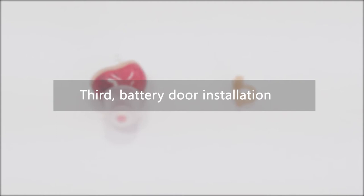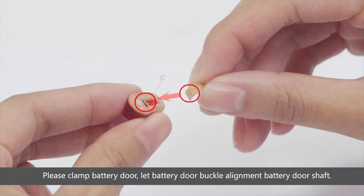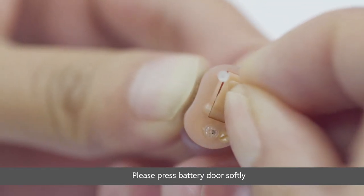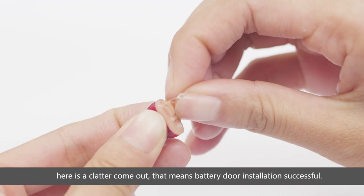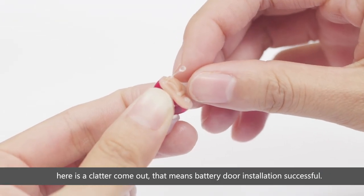Third, battery door installation. Clamp the battery door and let the battery door buckle align with the battery door shaft. Press the battery door softly until you hear a clatter. That means the battery door installation is successful.